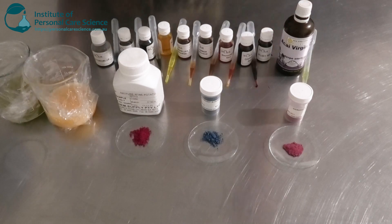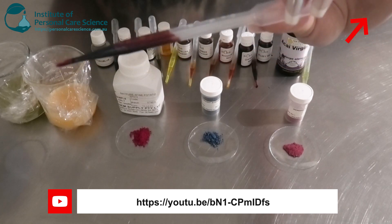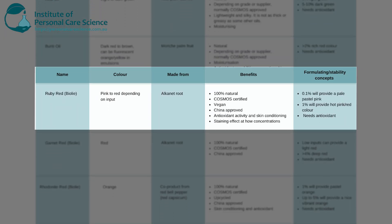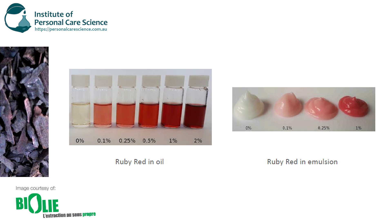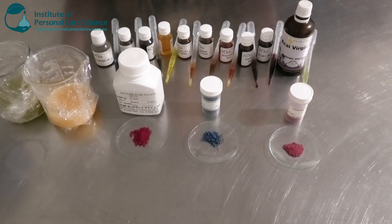My first one is the Ruby Red. I have used this in a couple of formulations before. It gives a very nice pink to hot pink slash red, depending on input. This is from the Alkanet Root — 100% natural, Cosmos certified, vegan, and China approved. It also has antioxidant activity and skin conditioning benefits. When used in high concentrations, it actually provides a skin staining effect, making it good for use in makeup products. Looking at the color chart: 0.1% provides a pale pastel pink, and 1% provides a hot pink slash red color.